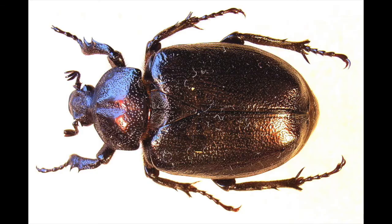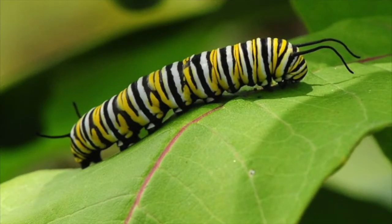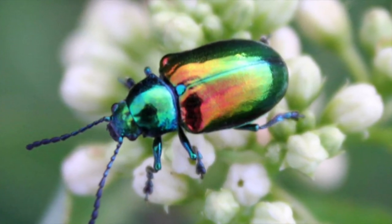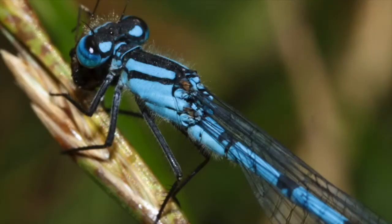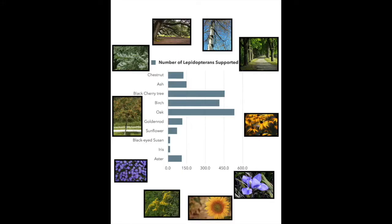Insect adaptations develop over time. Different generations adapt to different plants and habitats. Insects are very picky — they only use certain plants for food and shelter. All animals get energy from plants, or by eating animals that consume plants. Insects help pass energy from plants to animals. Animals that can't eat plants can consume insects for energy. This is why insects are vital to a healthy ecosystem.